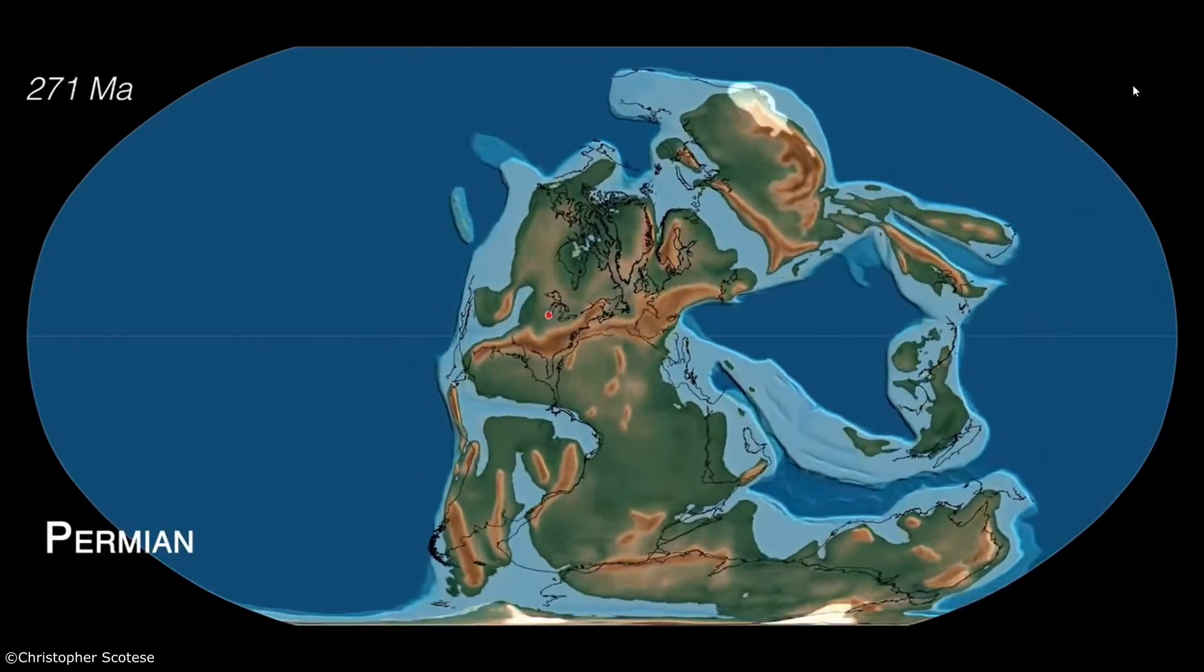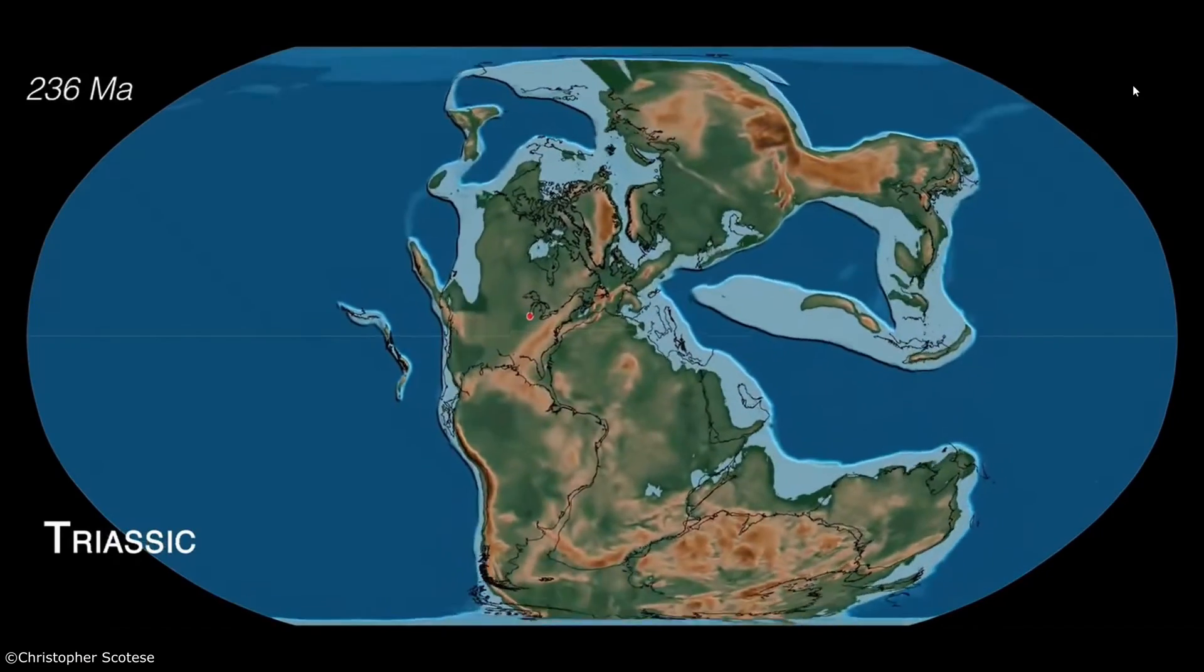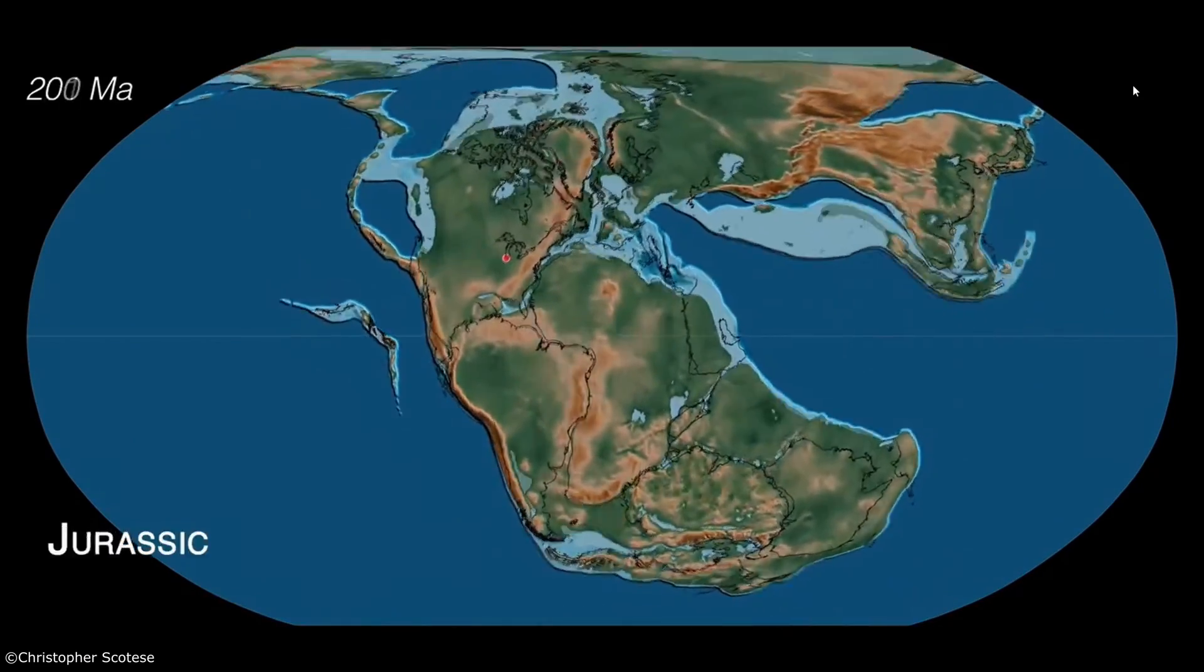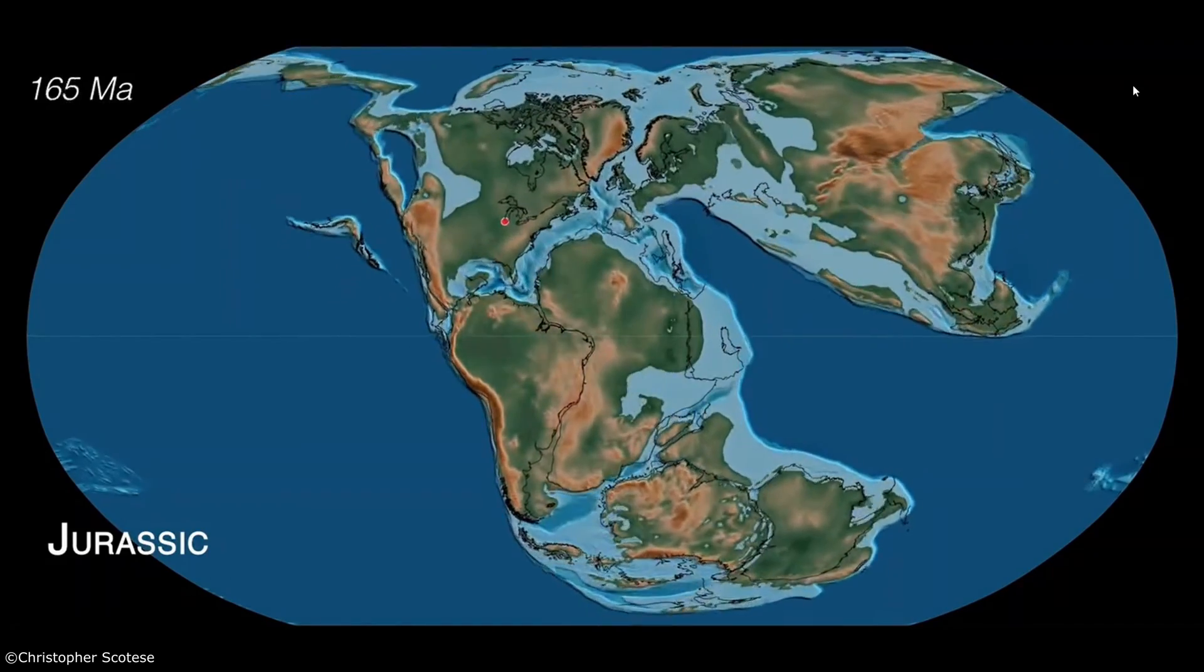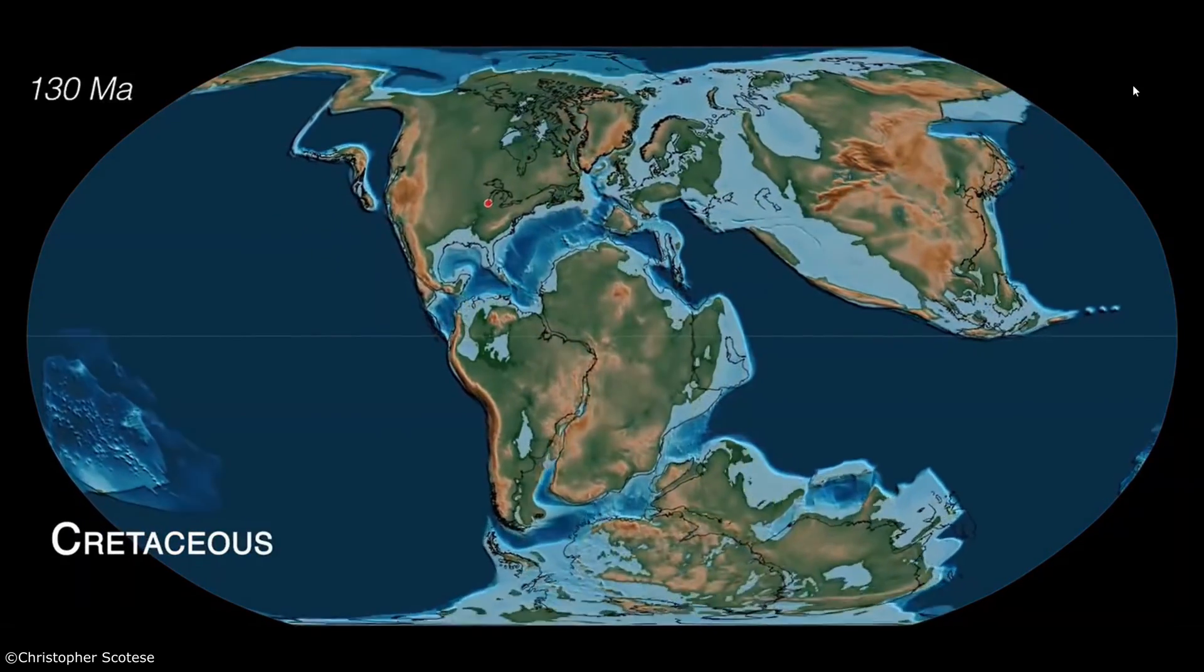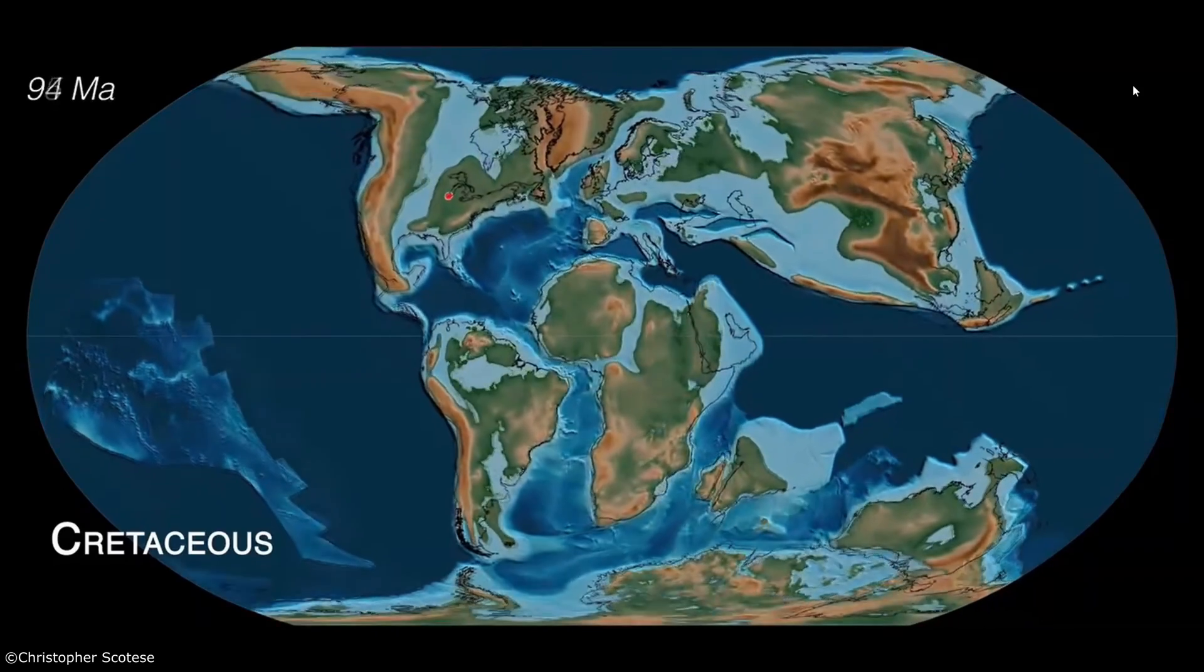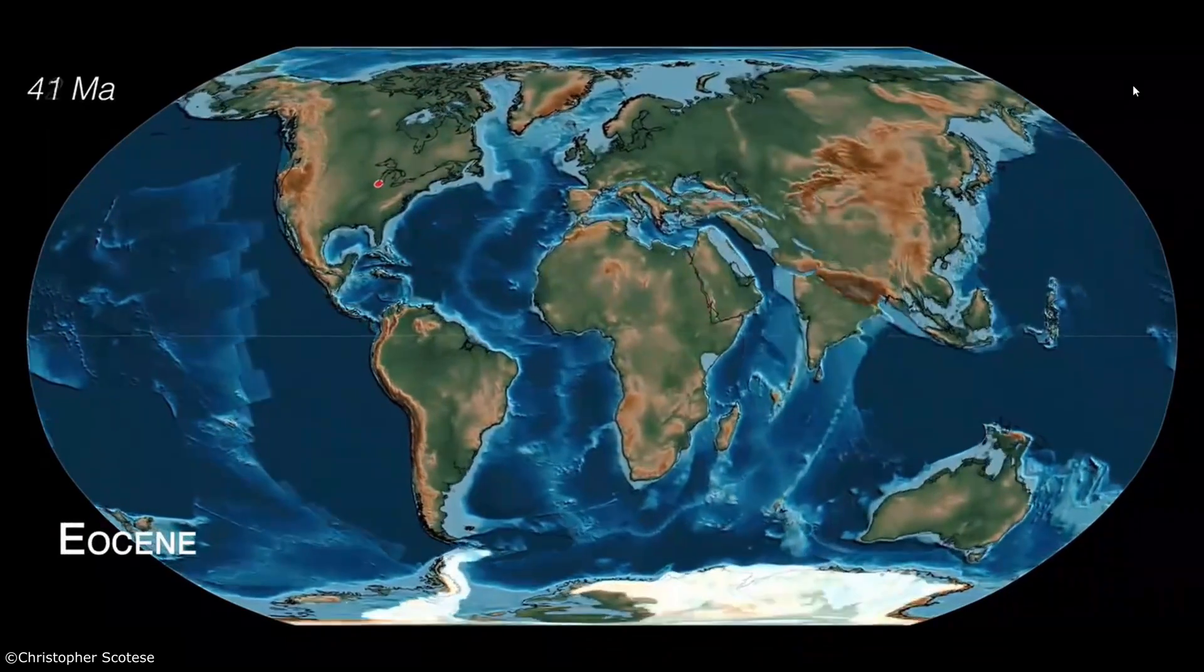The truth is that Wegener was right in his observation. Continental drift was real, but he couldn't explain its origin. In reality, the moon didn't have enough force to cause it, nor did the continents just slide over the ocean floor.